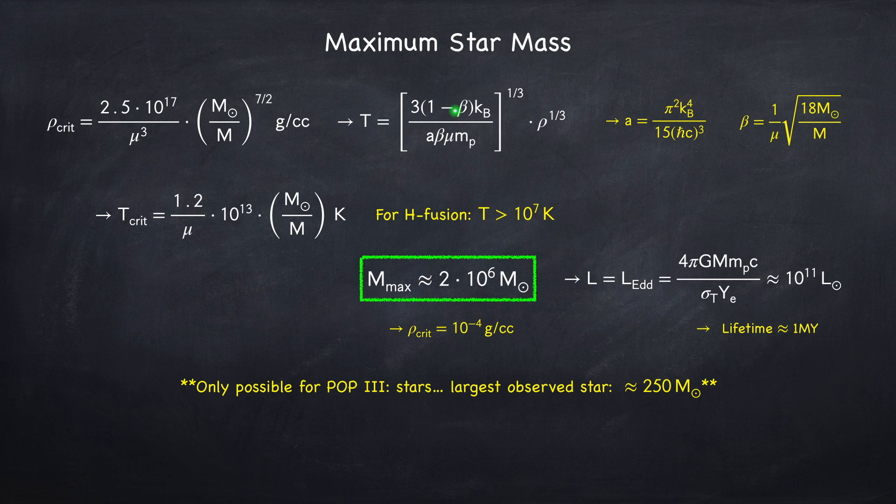I should also point out that most models put POP3 stars at about 100 to 1000 solar masses, so still pretty far off from this maximum theoretical limit. And the largest known star that's ever been observed is about 250 solar masses, so again we don't have any evidence that these supermassive stars ever existed.